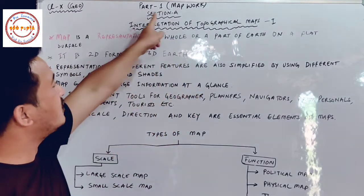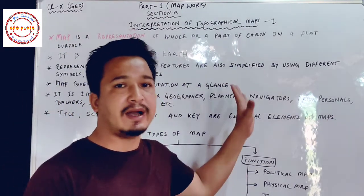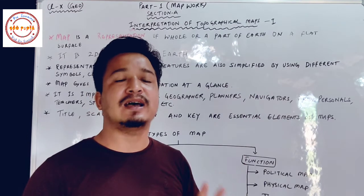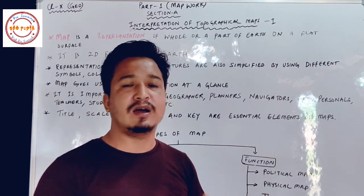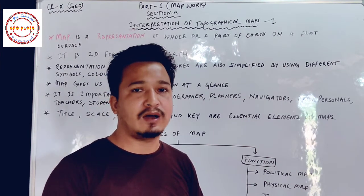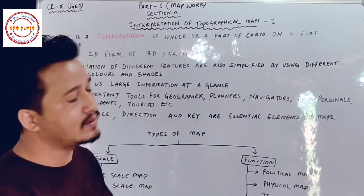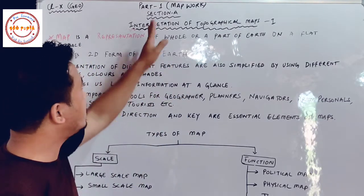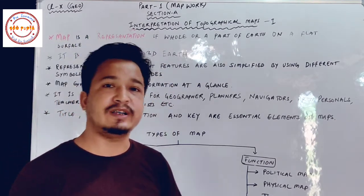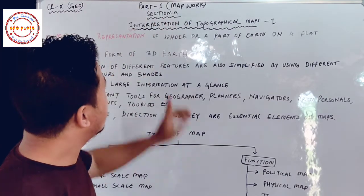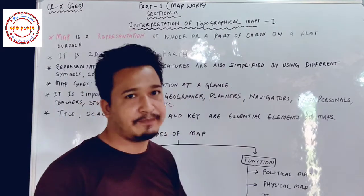Without wasting time, let us begin Part 1, Map Work. This is the practical part, so online classes are not enough; we may need some offline classes as well. If conditions are favorable, we will learn some concepts of this part in offline classes also. From Part 1 map work, there will be questions of 30 marks — that is interpretation of the topographical map.